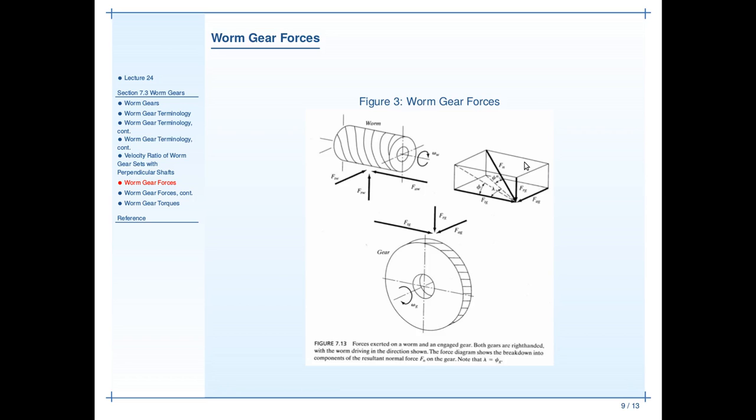Worm gear forces are quite similar to helical gear forces, which we'll talk about in the helix lecture. When you have a worm gear, it is generating an axial force, a tangential force, and a radial force. So the worm has axial, tangential, and radial. The gear also has axial, tangential, and radial.